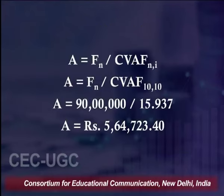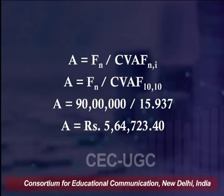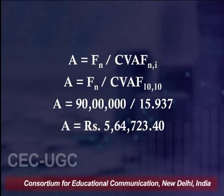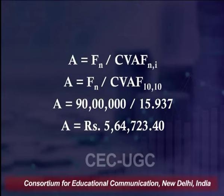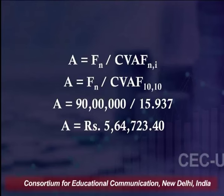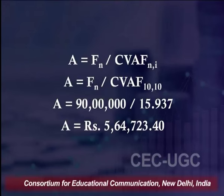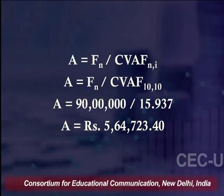Using the formula: Annuity = FN / CVAF = 90 lakh / 15.937 = rupees 5,64,723.4. The conclusion is that rupees 5,64,723.4 must be set aside every year for 10 years to accumulate 90 lakh at the end of 10 years. This is how we calculate the required annuity using the sinking fund concept.